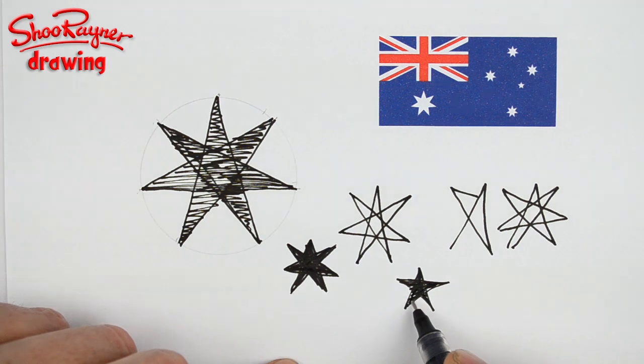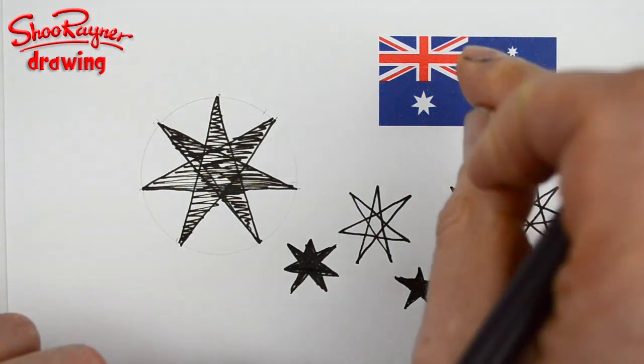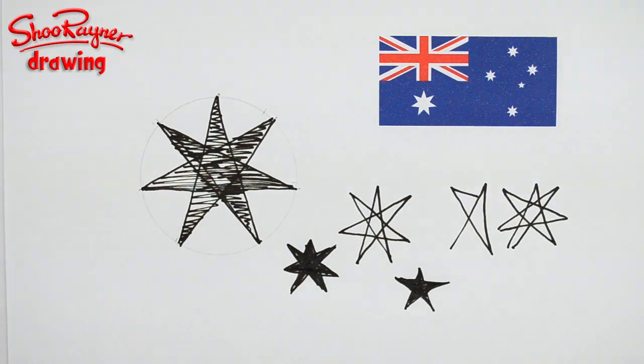I've also shown you how to draw the Union Flag which goes up in the corner there. If you're not Australian and you're not British and you don't understand why Australia has a Union Flag in the top corner, it's all to do with history and the Commonwealth and all sorts of things like that. Some people might not like it to be there anymore, but we won't go into that here.